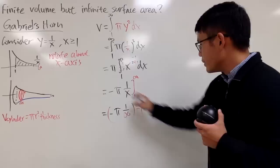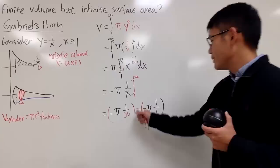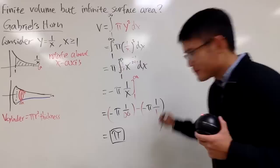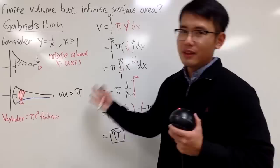If you work this out, you see this approaches 0, negative times negative, you get positive π. As you can see, this is the volume of Gabriel's horn. The volume is equal to π, and of course, that is finite.